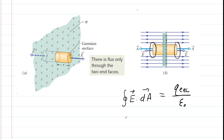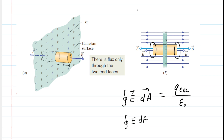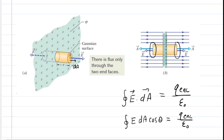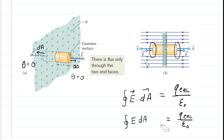We can rewrite our integral by recalling that a dot product is the magnitude of the electric field times the magnitude of the dA vector, multiplied by the cosine of the angle between them. The dA vector points away from the interior of our Gaussian surface. On the right end cap, the dA vector and the electric field vector are both pointing to the right, so the angle between them is zero. On the left end cap, the dA vector and electric field vector are also both pointing in the same direction, so that angle is also zero degrees. The cosine of zero degrees is one, so we can remove this term.